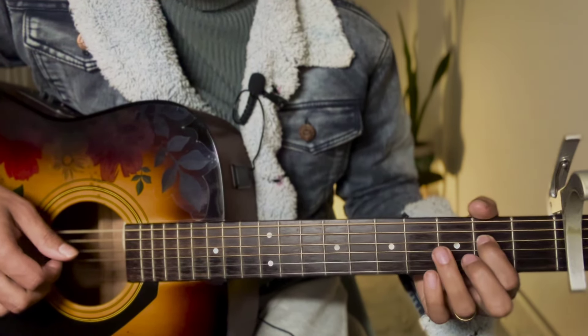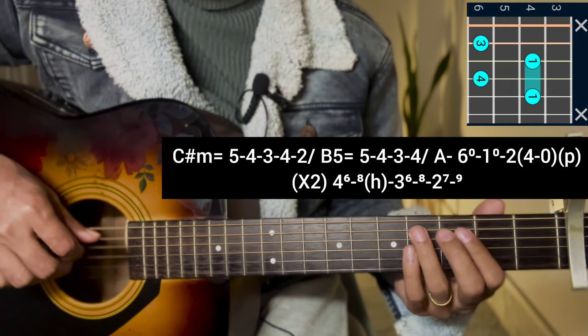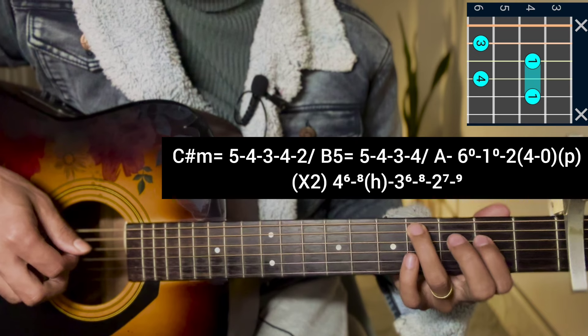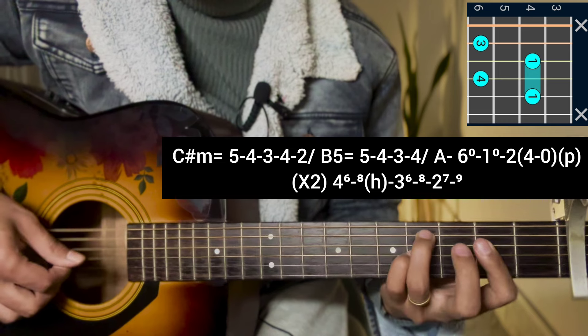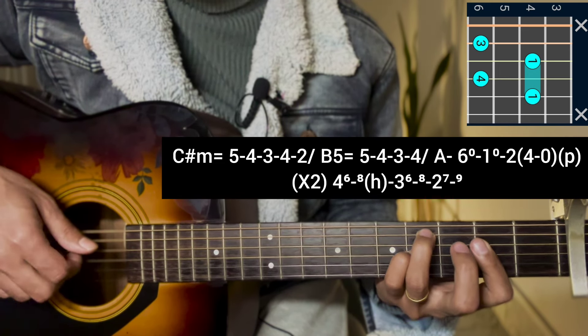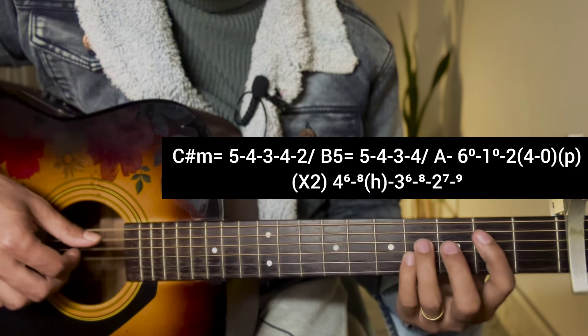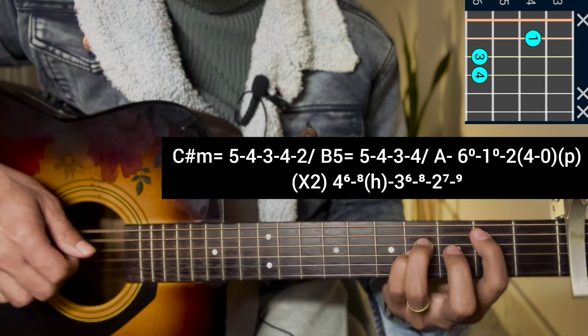4th string 4, 3rd string 6, 2nd string 4. C sharp 5-4-3-4-2, 3rd string 5-4-3-4.